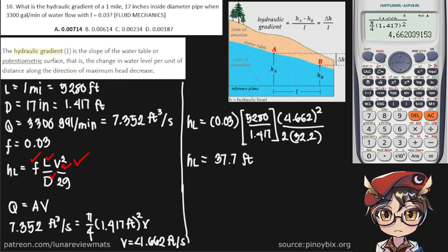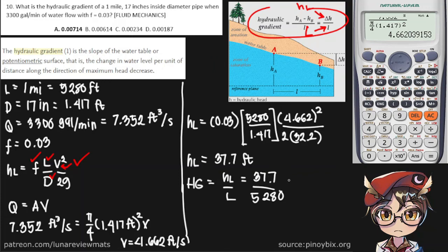Now the hydraulic gradient equation is already prepared. We just need to change delta H into H sub L and our unit of direction is the entire length of the pipe which is big L. So Hg is equal to HL over L. We just need to put our values in, 37.78 over 5,280. If these are in feet they would cancel out anyway and we should get a value of 0.00714. And that is our final answer.